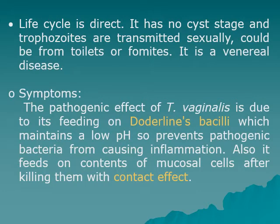The life cycle is direct. There is no cyst stage and trophozoites are transmitted sexually, or occasionally through toilets or fomites. It is a venereal disease. The pathogenic effect of Trichomonas vaginalis is due to its feeding on Döderlein's bacilli, which maintain the low pH of the genital tract. Disrupting this pH allows pathogenic bacteria to cause inflammation. It also feeds on mucus cell contents after killing them by contact.